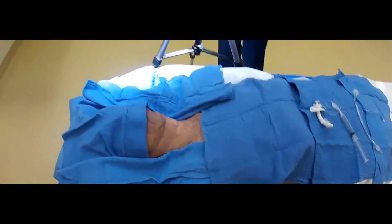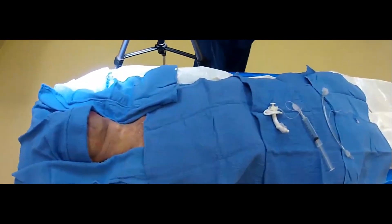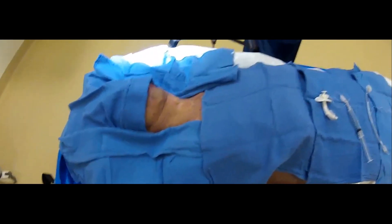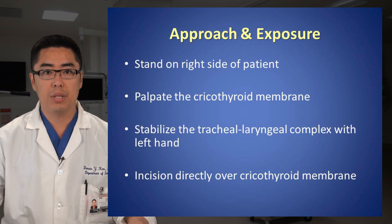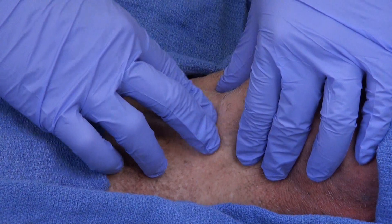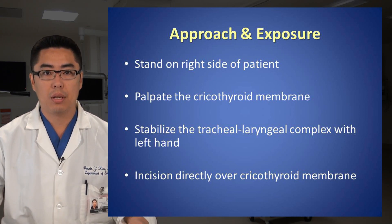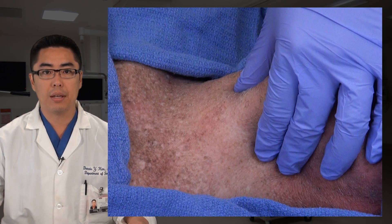From the standpoint of approach and exposure, the operating surgeon should stand on the right side of the patient. The key step in this procedure is palpating the cricothyroid membrane, which is located between the thyroid cartilage superiorly and the cricoid cartilage inferiorly. Prior to creating an incision, it is important for the surgeon to stabilize the tracheal-laryngeal complex with the left hand.